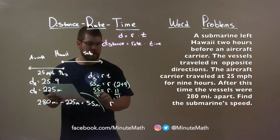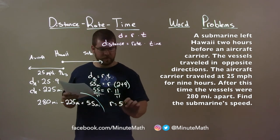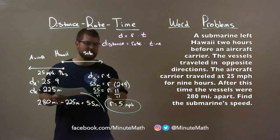And rearrange this. R is by itself. 55 divided by 11 is 5. That's 5 miles per hour. And that is how fast the submarine speed is.